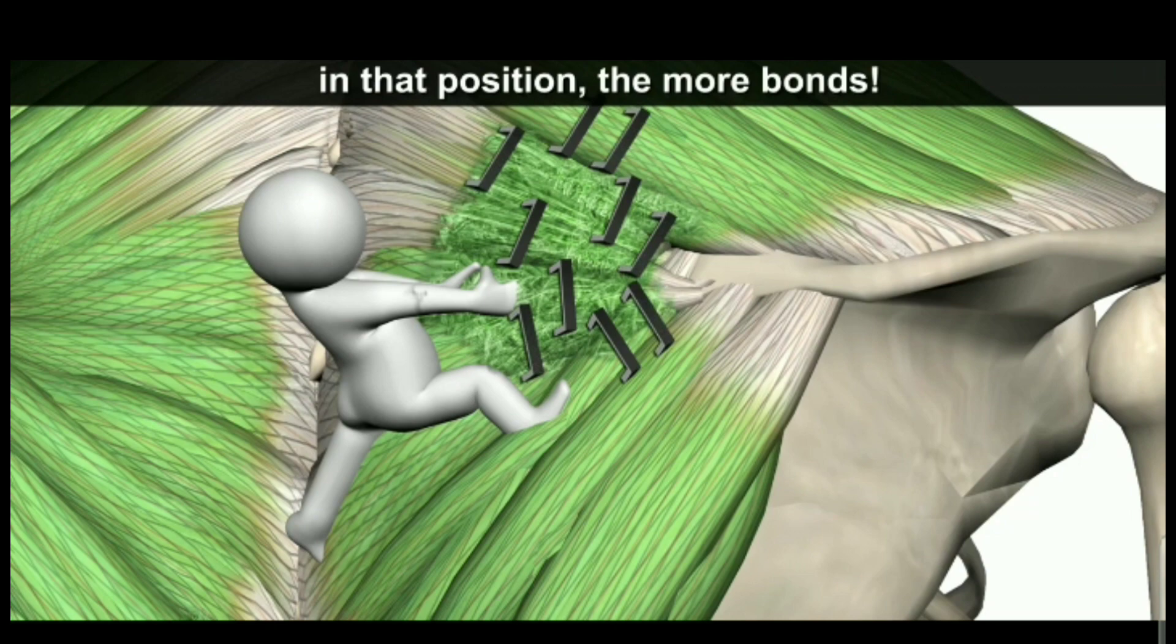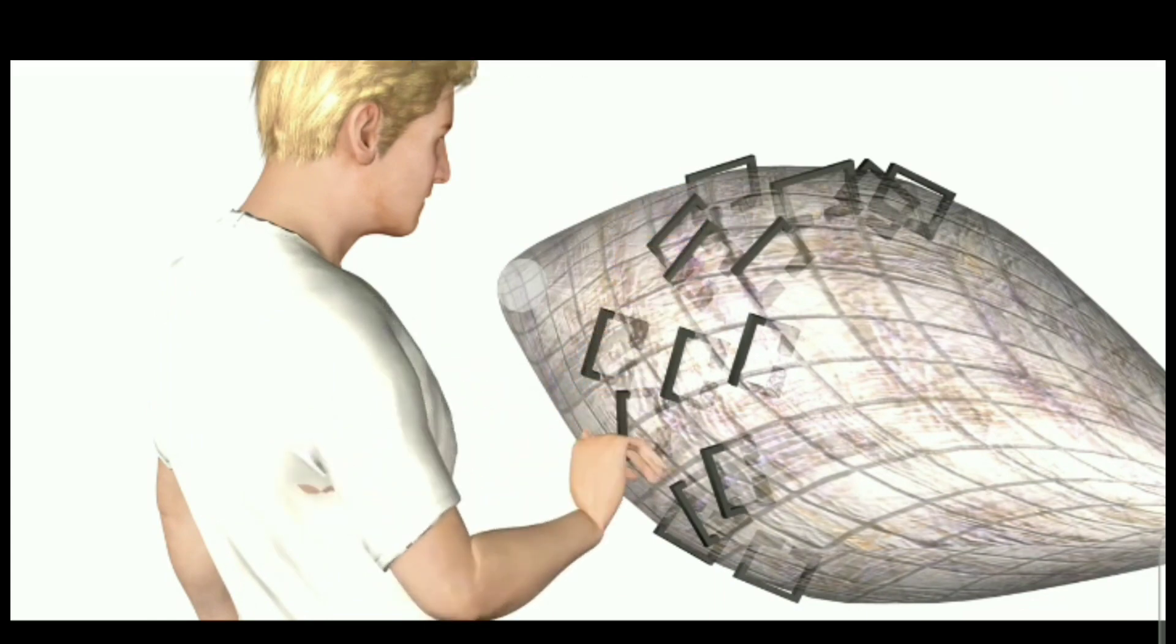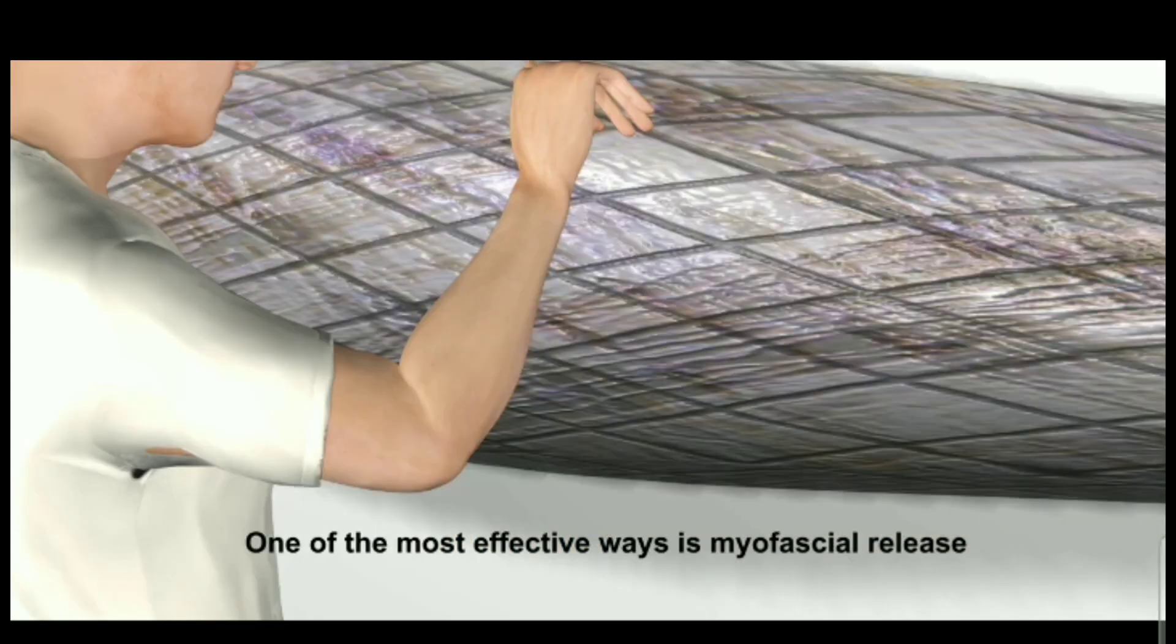How can we release these bonds? One of the most effective ways is myofascial release. The direction for a locked long fascia should be vertical to the muscle fibers.